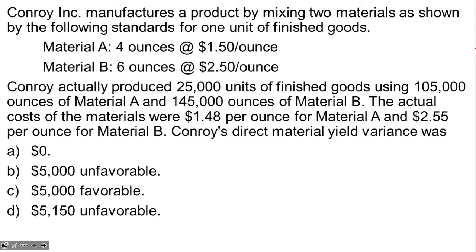Conroy Inc manufactures a product by mixing two materials, as shown by the following standards for one unit of finished goods. Material A: four ounces at $1.50 per ounce. Material B: six ounces at $2.50 per ounce. Conroy actually produced 25,000 units of finished goods using 105,000 ounces of Material A and 145,000 ounces of Material B. The actual costs were $1.48 per ounce for Material A and $2.55 per ounce for Material B.